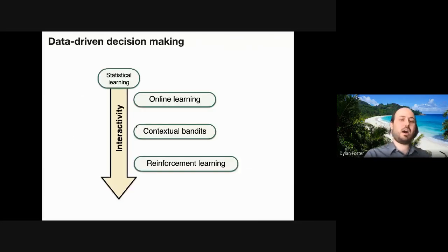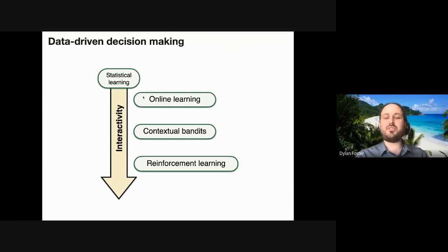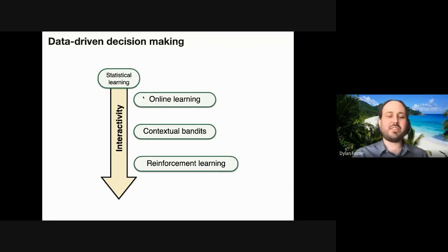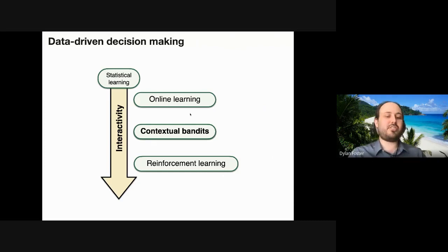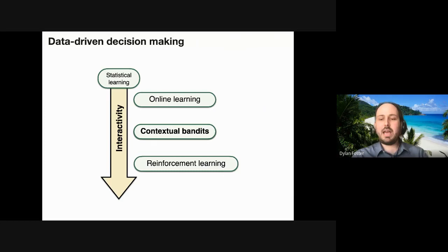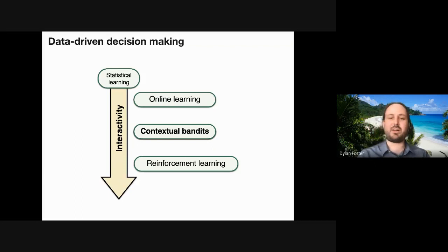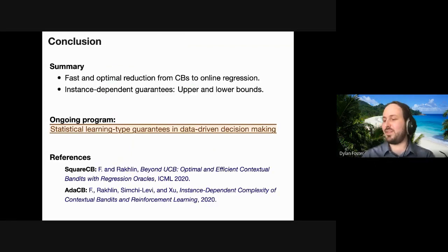To wrap up: there's a hierarchy of data decision-making problems, all generalizations of statistical learning adding additional interactivity. Online learning adds sequential decisions. Contextual bandits adds partial feedback. RL adds evolving states. I mostly talked about contextual bandits, where we provided both a general-purpose algorithmic principle and general tools for understanding sample complexity in the worst case and in the instance-dependent setting. I hope this continues the development of a statistical learning-based perspective in RL and decision-making more broadly, leading to new interesting and practical algorithms.